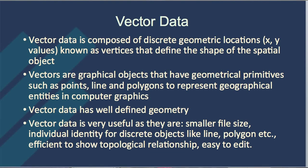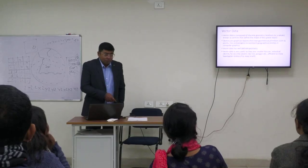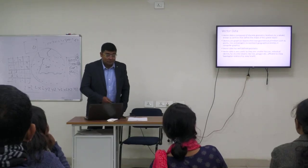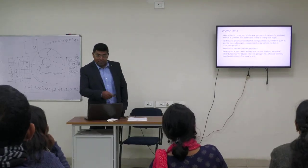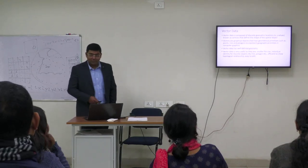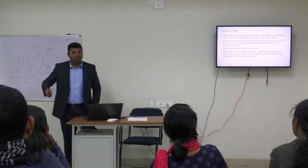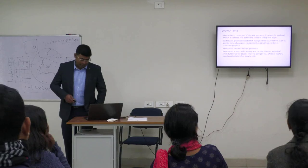Vector data is very useful because it has a small file size and individual identity — points are kept as point vector data, lines as line vector data, and areas as area vector data. These vector data are organized as feature classes under a geodatabase, and there are different formats of vector data which we will discuss.